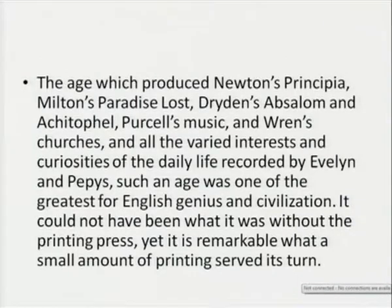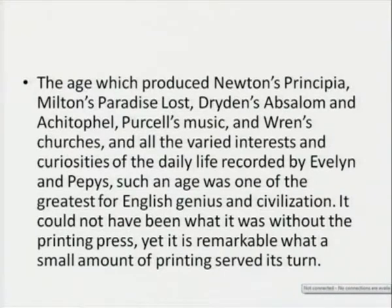The age which produced Newton's Principia, Milton's Paradise Lost, Dryden's Absalom and Achitophel, Purcell's music, and all the varied interests and curiosities of daily life recorded by Evelyn and Pepys — such an age was one of the greatest for English genius and civilization. Many think the Augustan age was a significant age for English genius and civilization. It could not have been what it was without the printing press, yet it is remarkable what a small amount of printing served its term. Matthew Arnold had already remarked that the glory of an age is poetry, but now, for the first time, we must chronicle the triumph of English prose.